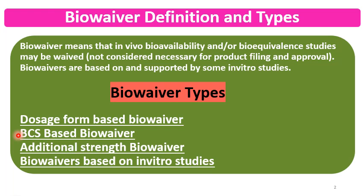For generic products, BioWaivers can be applied from the product development stage. But for reference or innovator products, BioWaivers are applied based on acceptable bioequivalence studies conducted at the research stage. Please remember that BioWaivers are not given to innovator products. Innovator products, 505(b)(2) type products, and hybrid products must conduct bioavailability or bioequivalence studies.